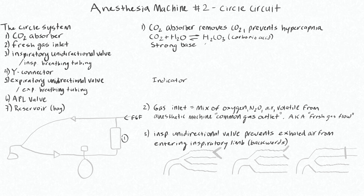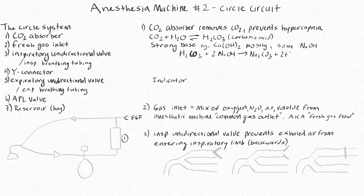These chemicals are strong bases — calcium hydroxide is the main component of most CO2 absorbers. There are different formulations; some also have sodium hydroxide. Barium hydroxide absorbers have existed but tend to produce more toxic byproducts. The basic reaction is: carbonic acid plus sodium hydroxide makes sodium carbonate, water, and heat. If there is rapid conversion of CO2, you would actually feel the CO2 absorber heating up because it's an exothermic reaction.